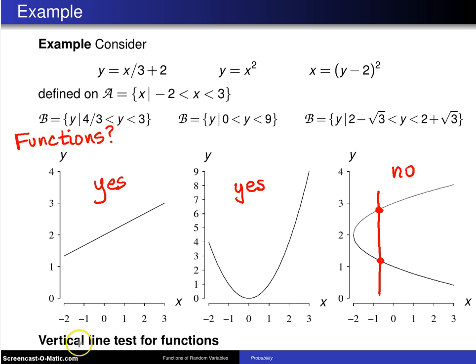And this brings up the vertical line test for function. If you can draw a vertical line that hits the graph of the relationship at two or more points, then the answer is no, it's not a function.